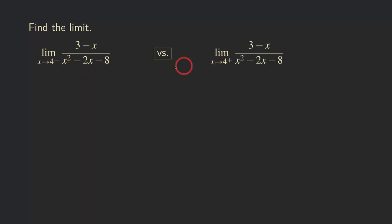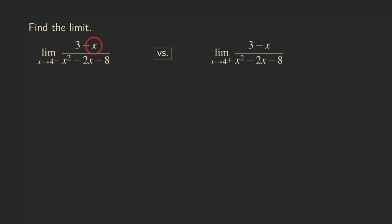If you just plug in 4 into all the x's that you see here, you can see that the numerator is going to be approaching a non-zero number. Because if you plug 4 in here, you are getting 3 minus 4, so the numerator is approaching negative 1.